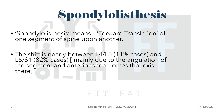L4-L5 and L5-S1 spondylolisthesis are common. Out of these, L5-S1 is the commonest because of the angulation of that segment and the anterior shear forces that exist there.